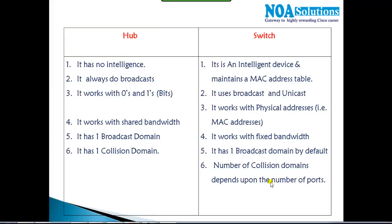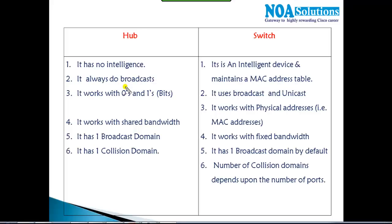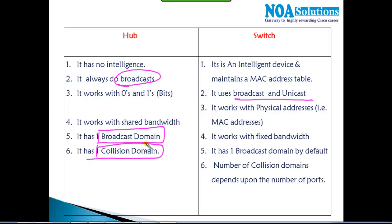In this section we'll continue with our discussion on the difference between hub and switch. In the previous video we saw the major difference: hubs always do broadcast, whereas switches do broadcast initially and later do unicast. Now there is one more difference between hub and switch — something called broadcast domain and collision domain.